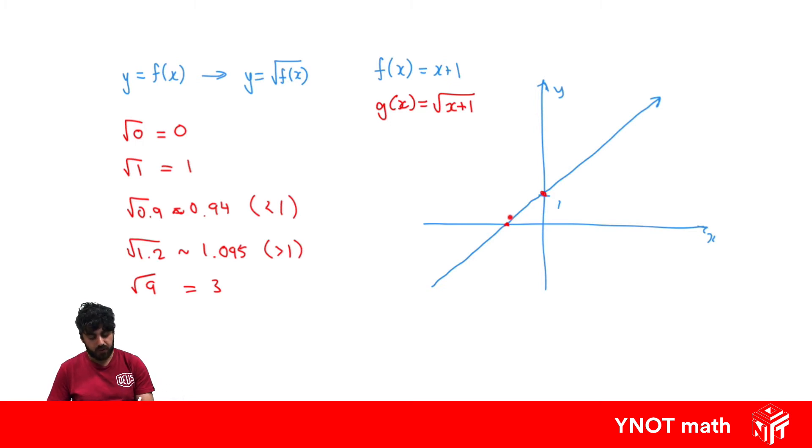All of these y values are between 0 and 1, and we know that if we have a y value between 0 and 1, our square root function is going to be above that graph. So we're expecting something like this because all those y values are above that graph.